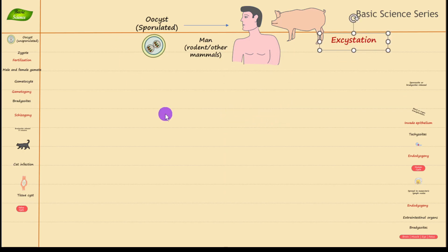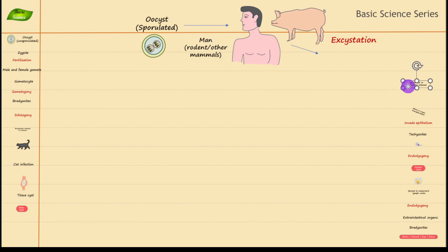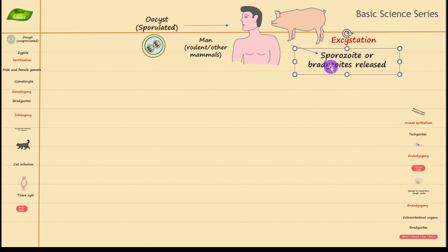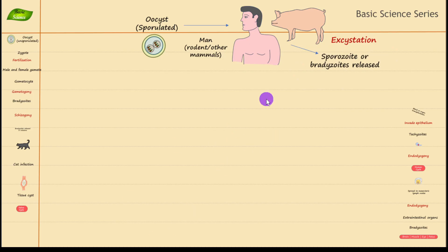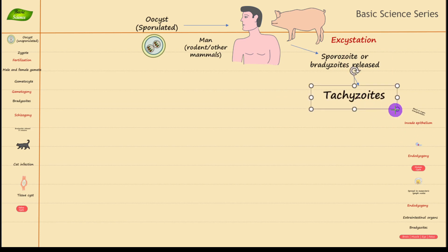Once the oocyst enters the host, the next stage is excystation, where the sporozoites come out of the oocyst. Bradyzoites can also come directly from tissue cysts. So you can have sporozoites coming from the sporulated oocyst and bradyzoites coming from the tissue cyst — this is one important aspect. After that, they get converted into tachyzoites, which are the active form of the parasite.